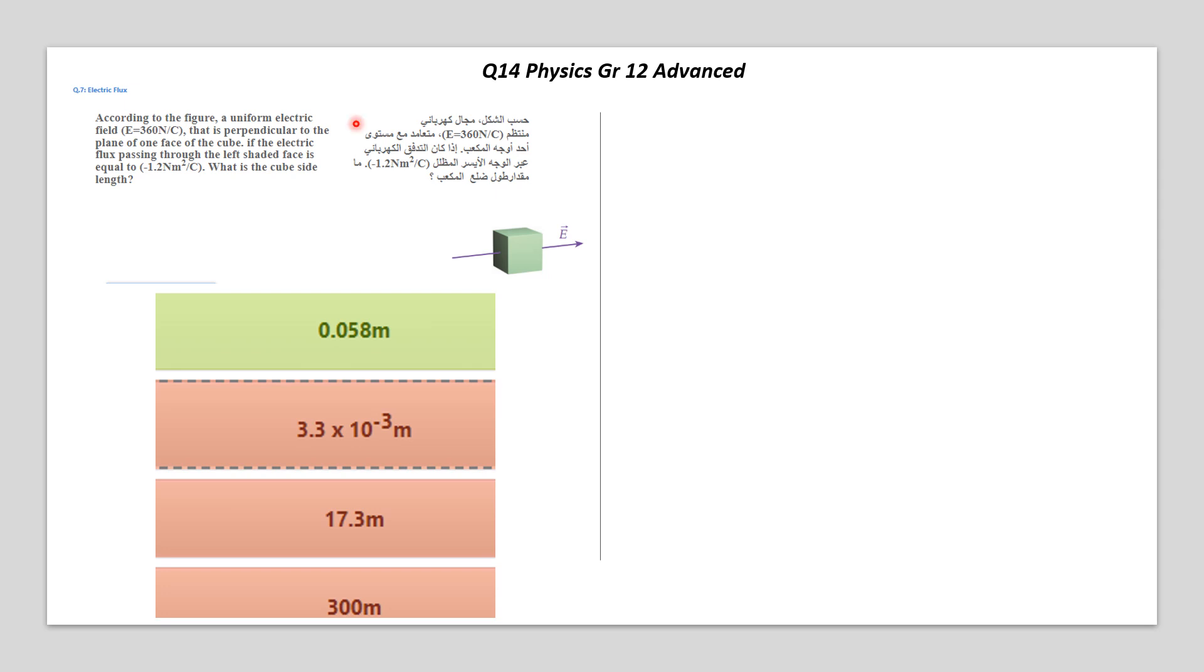Welcome back to question 14 for grade 12 advanced. According to the figure, a uniform electric field of 360 newtons per coulomb is perpendicular to the plane of one of the faces of the cube, as you see here.